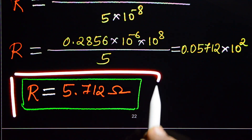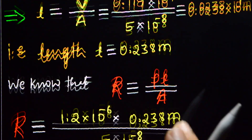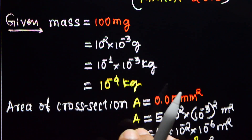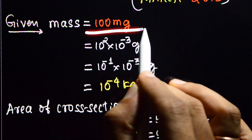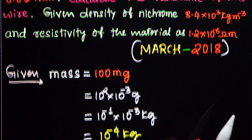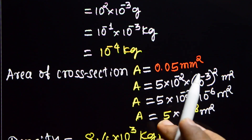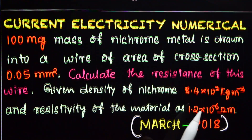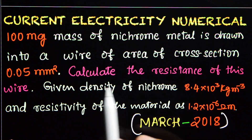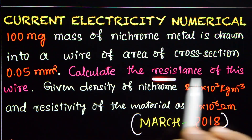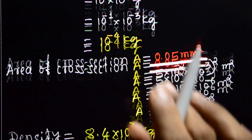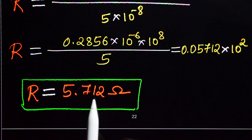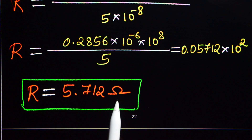This is the resistance of the wire, which has a mass of 100 milligram and is drawn into a wire of cross section area 0.05 mm². The resistance of the wire is 5.712 ohm.